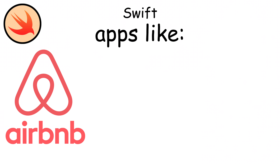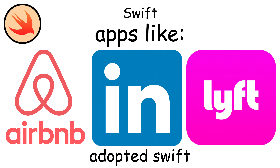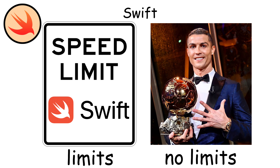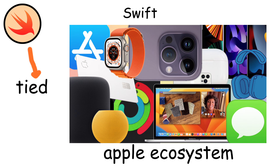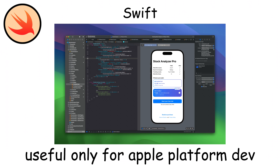Apps like Airbnb, LinkedIn, and Lyft have adopted Swift. However, Swift has major limitations — it's completely tied to Apple's ecosystem. While Swift is technically open-source, it's primarily useful only for Apple platform development.